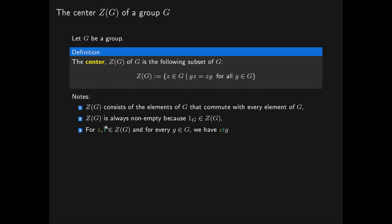Now if we have any two elements Z and T of our centre and an arbitrary element G of our group G, then the product ZTG is equal to ZGT, since T and G commute because T belongs to the centre of G. And that is equal to GZT, because Z and G also commute since Z belongs to the centre of G. So we've shown that the product of any two elements in the centre belongs to the centre, as G was arbitrary.